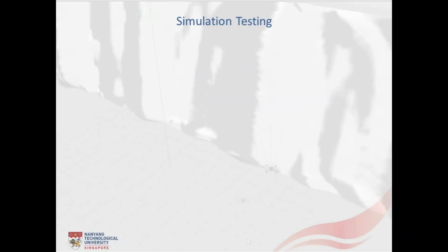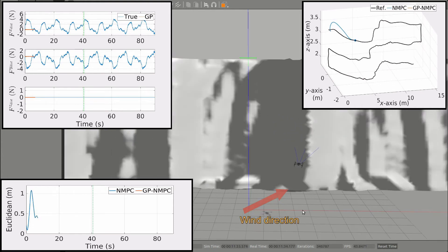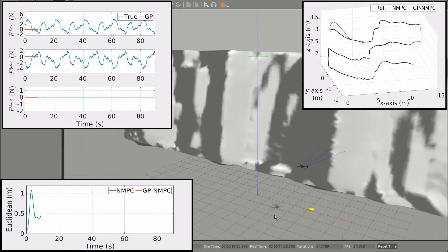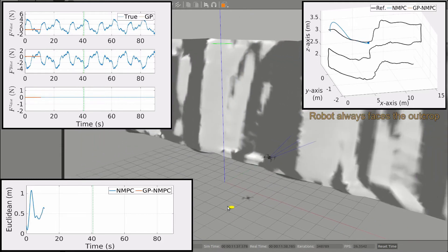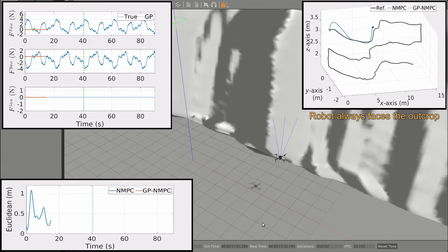We first evaluate the performance of the learning framework in the Gazebo-based simulation environment of the outcrop, wherein, the time-varying wind disturbances are introduced along X and Y directions. Here, one may also notice that the navigation algorithm adaptively commands the yaw angle such that the robot always follows the curvature of the outcrop.